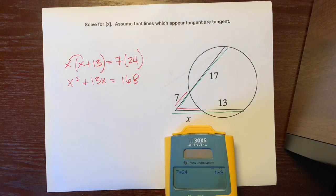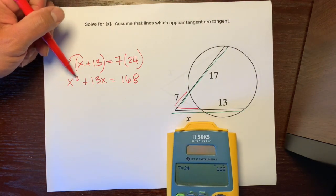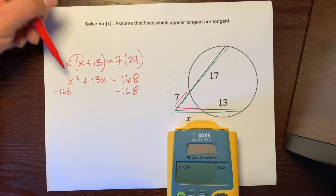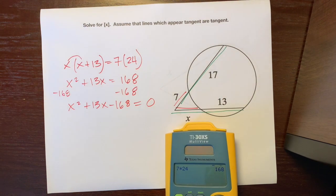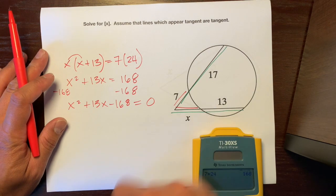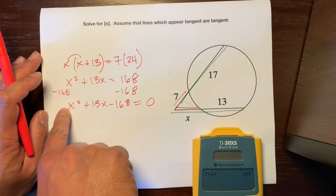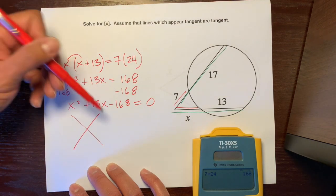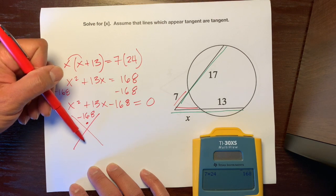Now we're going to take 168 and bring it to the other side — it's a quadratic when you have a square. So subtract it: x squared plus 13x minus 168 equals 0. Now we're going to factor this. You could do the quadratic formula, complete the square, or the x-factor method. Here A is 1, B is 13, and C is -168. We need two numbers that multiply to negative 168 and add up to 13.